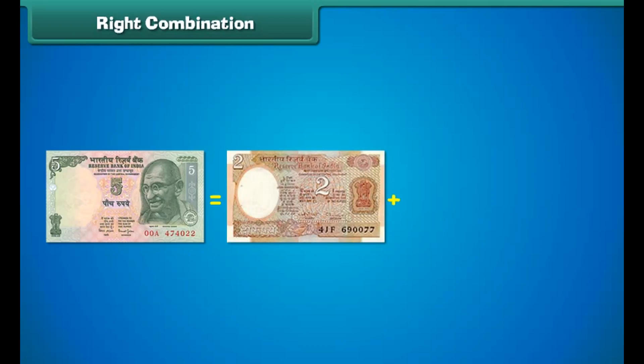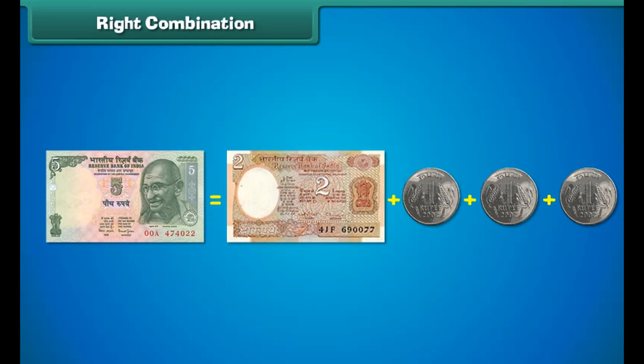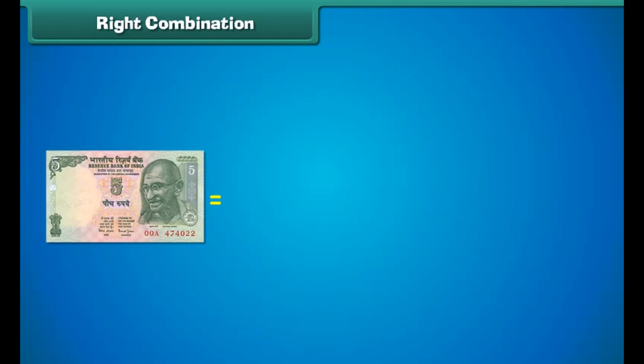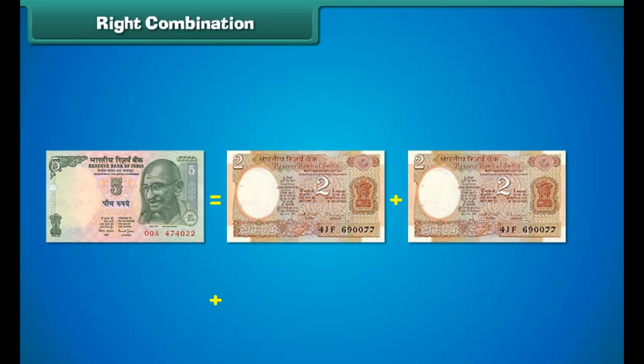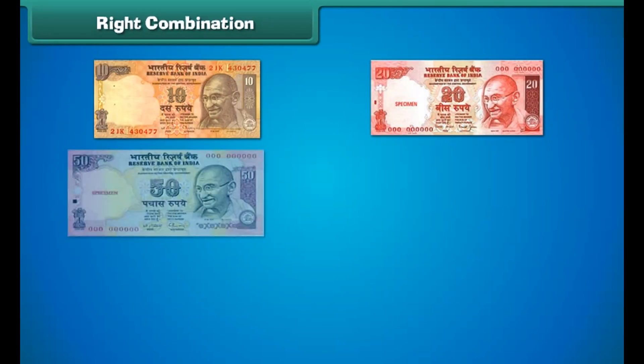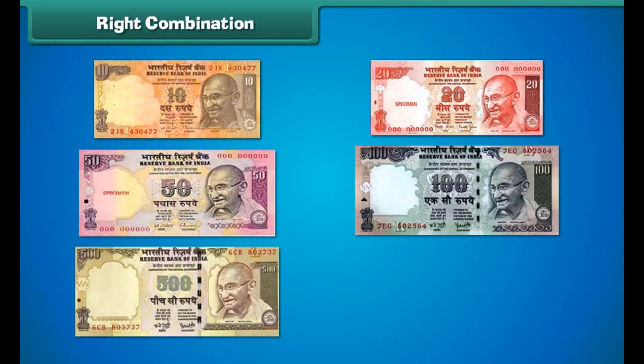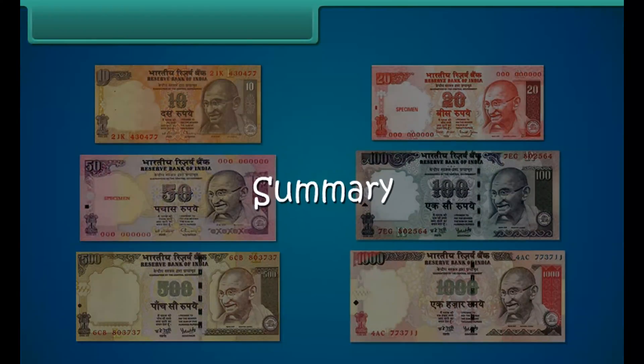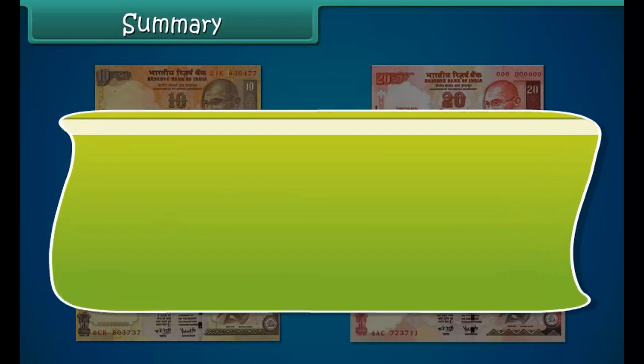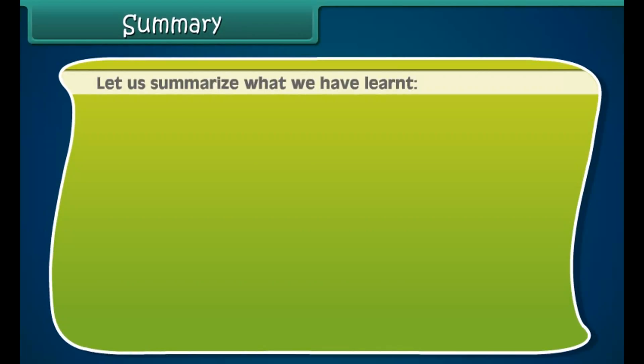Let us learn about some right combinations of notes and coins. 1 five rupee note is equal to the sum of 5 one rupee coins. 1 five rupee note is also equal to the sum of 1 two rupee note and 3 one rupee coins. Similarly, 1 five rupee note equals 2 two rupees notes and a 1 rupee coin.